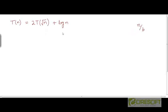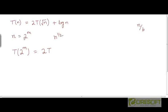One way to solve such recurrences is to assume that n is equal to 2 to the power m. What this will achieve is that we can write T accordingly. So if n is 2 to the power m, then n to the power 1/2 will be 2 to the power m/2. So T of square root of n becomes T of 2 to the power m/2. And since n is 2 to the power m, log n is going to be equal to m.